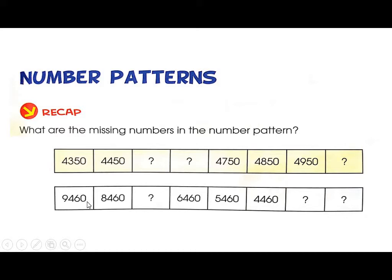First list: 4,350, 4,450, then two gaps, followed by 4,750, 4,850, 4,950. So the missing numbers are 4,550 and 4,650.